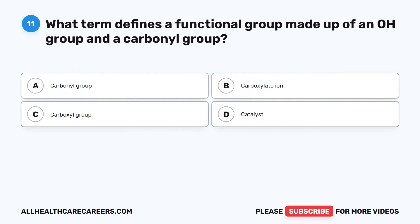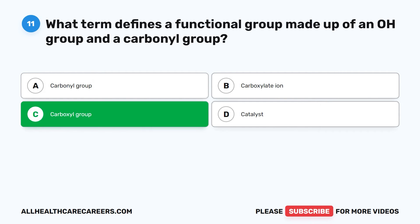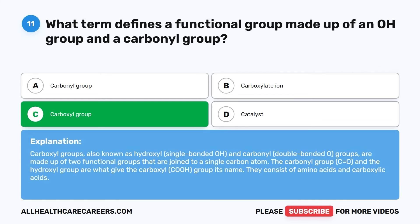Question 11. What term defines a functional group made up of an OH group and a carbonyl group? A. Carbonyl group. B. Carboxylate ion. C. Carboxyl group. D. Catalyst. The correct answer is C, Carboxyl group. Carboxyl groups, also known as hydroxyl (single-bonded OH) and carbonyl (double-bonded O) groups, are made up of two functional groups joined to a single carbon atom. The carbonyl group (C=O) and the hydroxyl group give the carboxyl (COOH) group its name. They consist of amino acids and carboxylic acids.